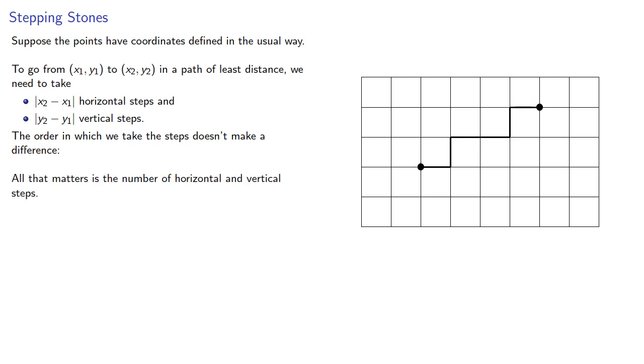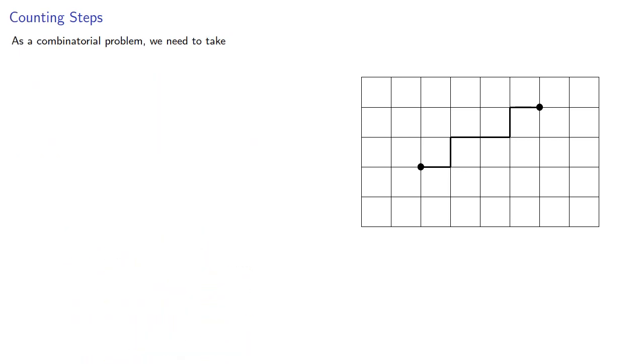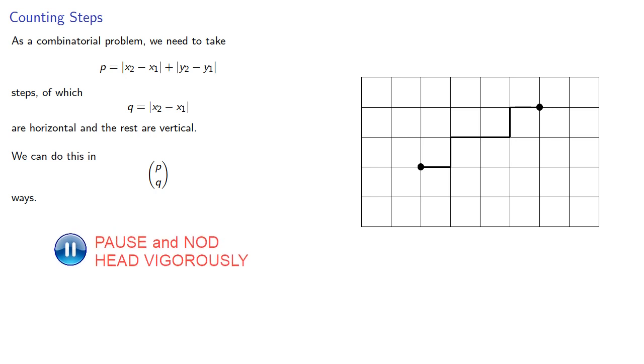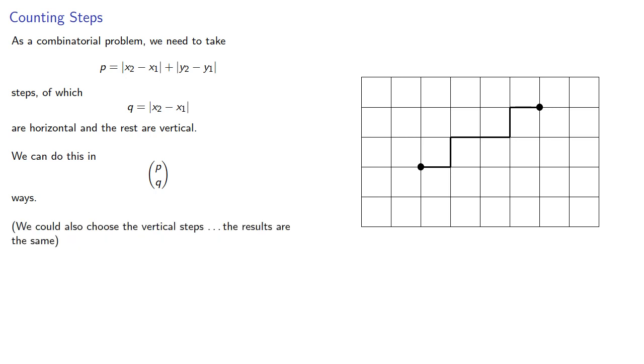All that matters is the number of horizontal and vertical steps. And so we can interpret this as a combinatorial problem. We need to take some total number of steps, of which a certain number are horizontal and the rest are vertical. We can do this in p-choose-q ways. We could also choose the vertical steps. The results are the same.